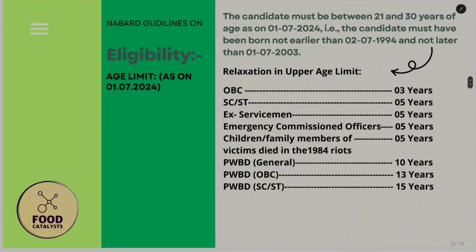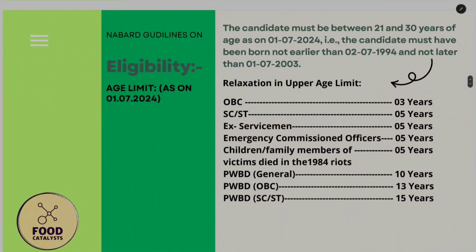The age limit is 21 to 30 years. Relaxations: OBC candidates get 3 extra years, SC/ST gets 5 extra years, ex-servicemen get 5 extra years, and emergency commissioned officers or children/victims of the 1984 events also get 5 extra years. For PwD candidates: general gets 10 extra years, OBC gets 13 years, and SC/ST gets 15 years.